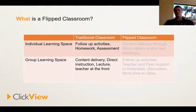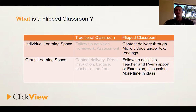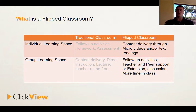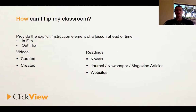You need to consider the way that you flip. In a traditional classroom, the individual learning space is about follow-up activities — homework and basic assessment tasks — while the group learning space is about content delivery, direct instruction, usually a lecture with the teacher at the front of the room. In a flipped classroom, we quite literally flip that. The individual learning space is where content delivery and explicit instruction occurs through a micro video or text reading. The group learning space is then for follow-up activities where you and peers can provide support, extension, and discussion, with more time for higher order thinking.